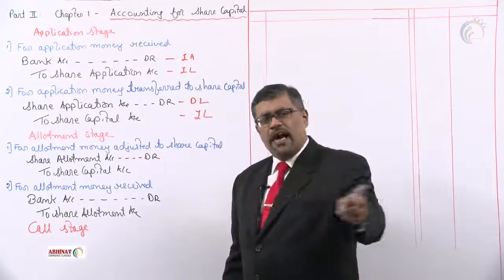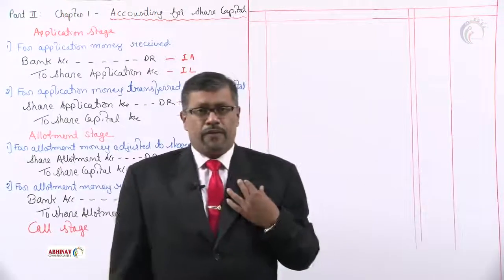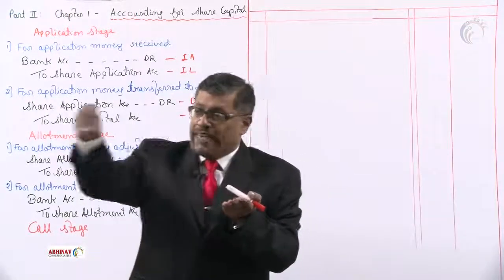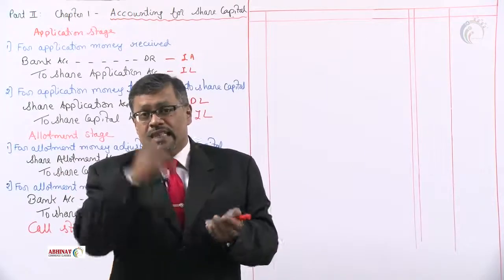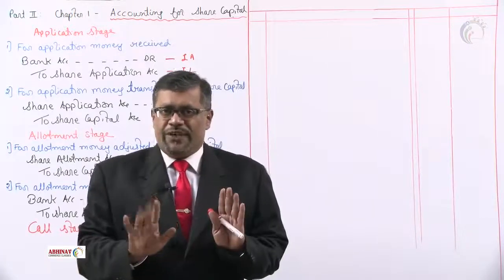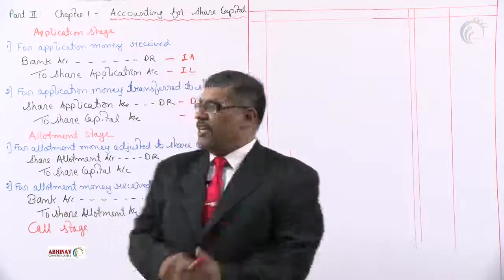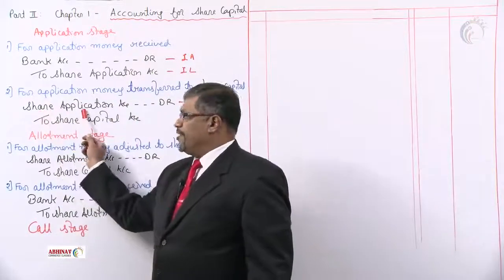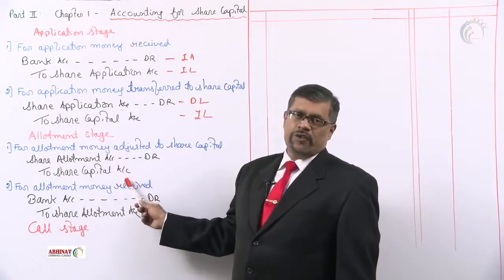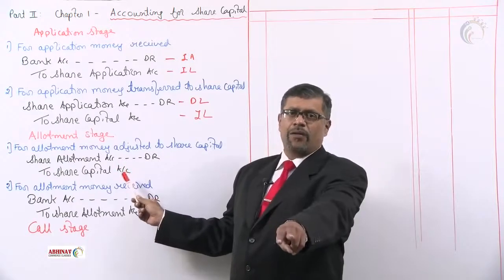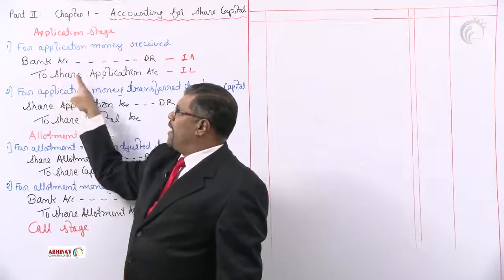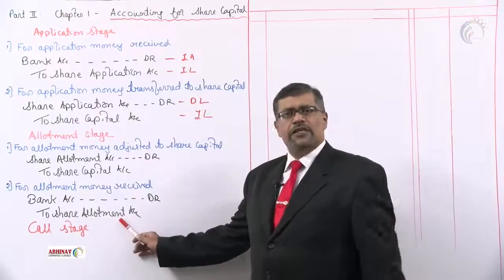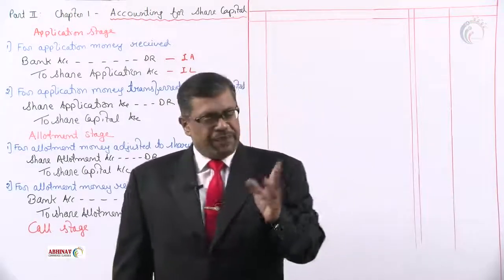Based on these two application entries, all other entries can be derived. For allotment, the first entry is allotment money adjusted to share capital: Share Allotment Account debit to Share Capital. The second entry is allotment money received: Bank Account debit to Share Allotment Account — not to application, but to share allotment. So if you remember the two application entries, all other entries follow the same pattern.